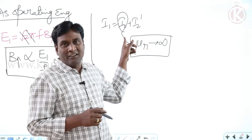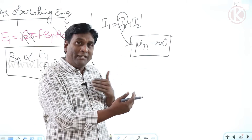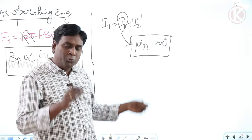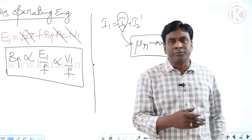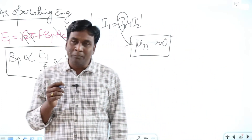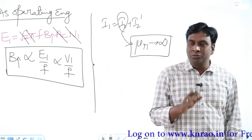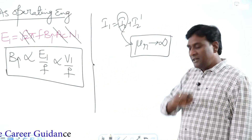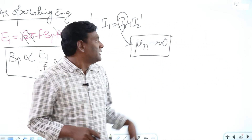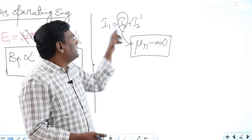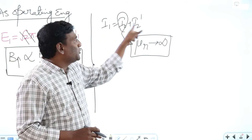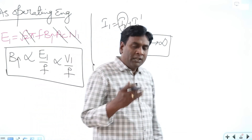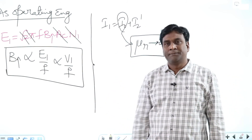For an ideal transformer, relative permeability is finite — no-load current exists even in an ideal transformer. Saying I₀ = 0 to simplify I1 = I2' is acceptable as an approximation, but claiming μ → ∞ is a wrong notion. This will be discussed in detail in phase two, where we build the equivalent circuit and model the practicalities of the transformer.